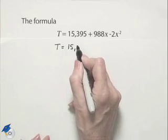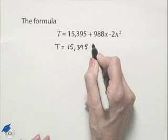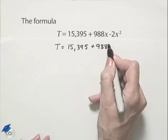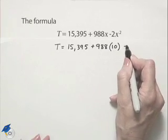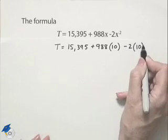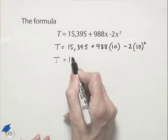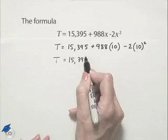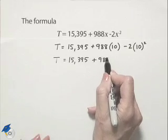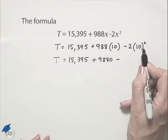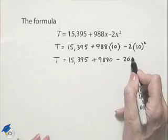So T is going to be 15,395 plus 988 times 10 minus 2 times 10 squared. That's going to give us 15,395 plus 9,880 minus 2 times 100, which is going to be minus 200.